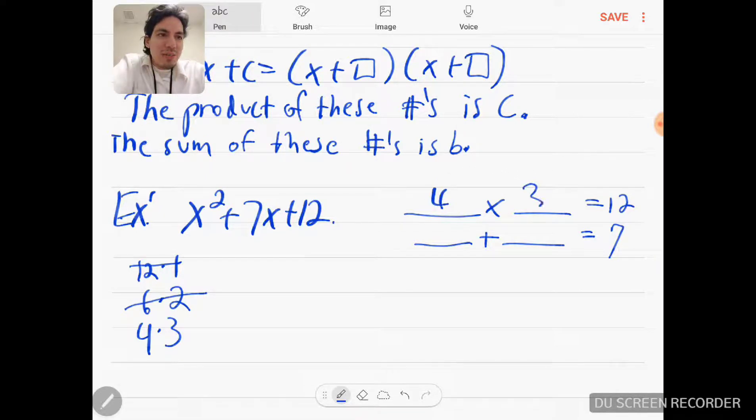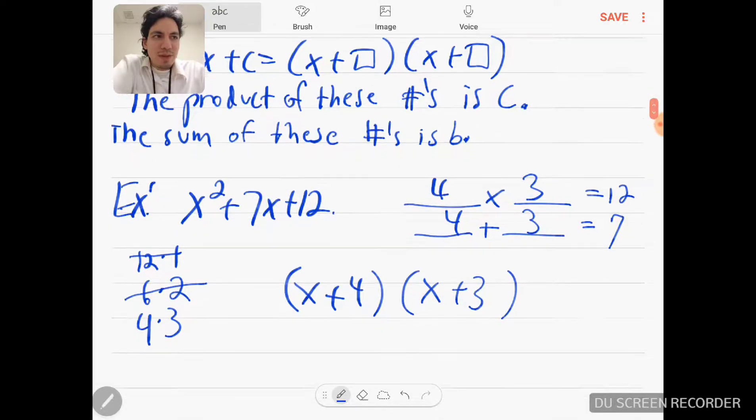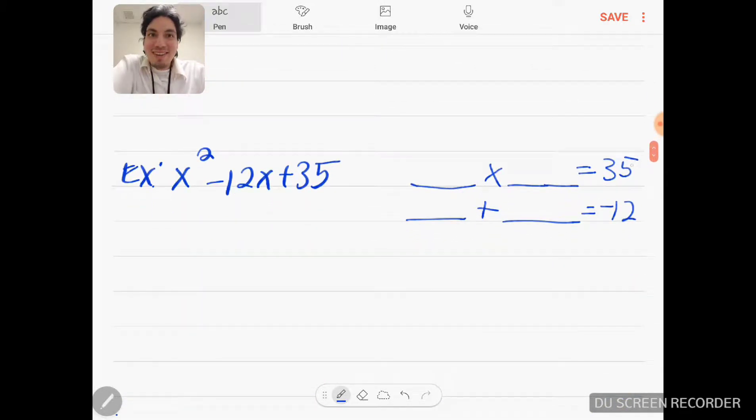But when I use 4 times 3, I get 12, and when I add them I also get 7. So the factors would be (x + 4) and (x + 3) will be my factors for that first one.